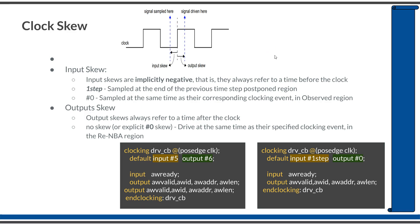Quite often you will never specify input and output skews with an explicit number, because that number refers to an explicit time unit before or after the clock edge. If you change your clock period or clock frequency, these values might also need to change. Therefore in most cases, when writing simple testbenches, you will specify the input skew as '#1step' and the output skew as '#0'. Note that it is '#1step', not just '#1'.